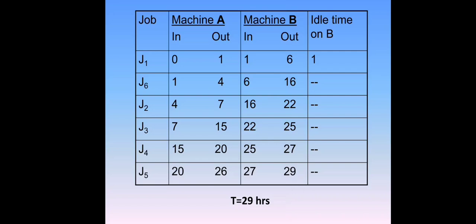J4 starts from 25, duration is 2 hours, so 25 plus 2 equals 27 hours. J5 starts from 27 hours, duration results in a final time of 29 hours. So the final total elapsed time overall is 29 hours. Therefore, capital T is equal to 29 hours.